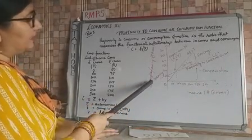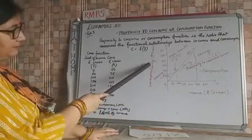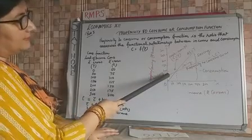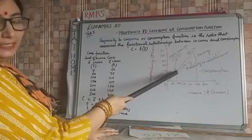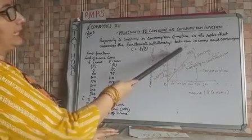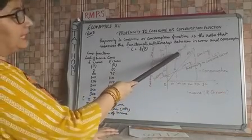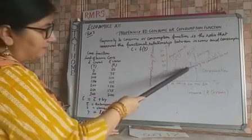Here you are observing that the consumption or saving where that is 100 and the income is also 100, means whatever is earned that is being consumed and that is known as the break even point. And after that saving is increasing.